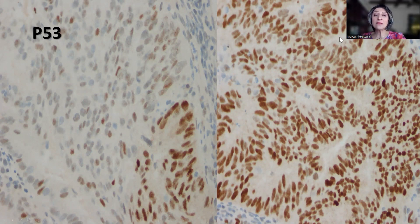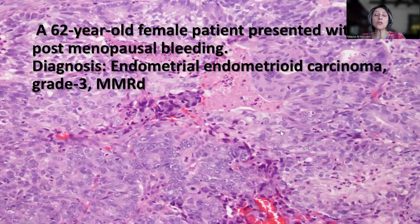This is not associated with a worse outcome compared to a genuine or naive P53 mutant tumor. The final diagnosis of this case was endometrial endometrioid carcinoma, grade 3, MMR-deficient tumor. I hope you find this tip useful in your daily practice. Thank you.